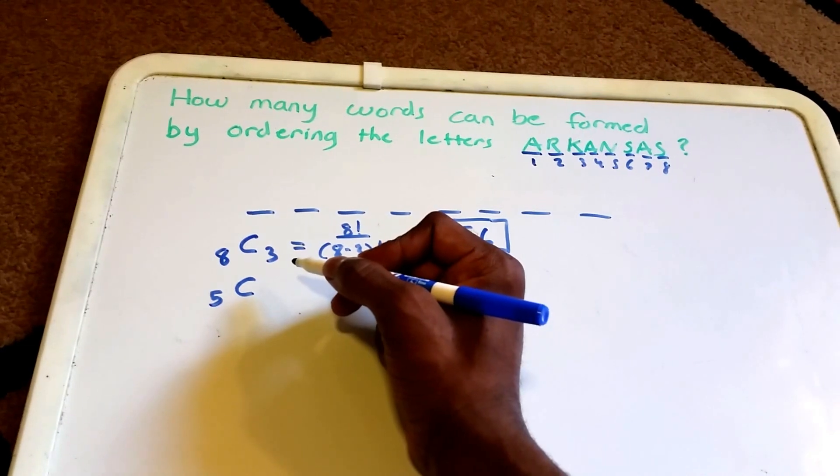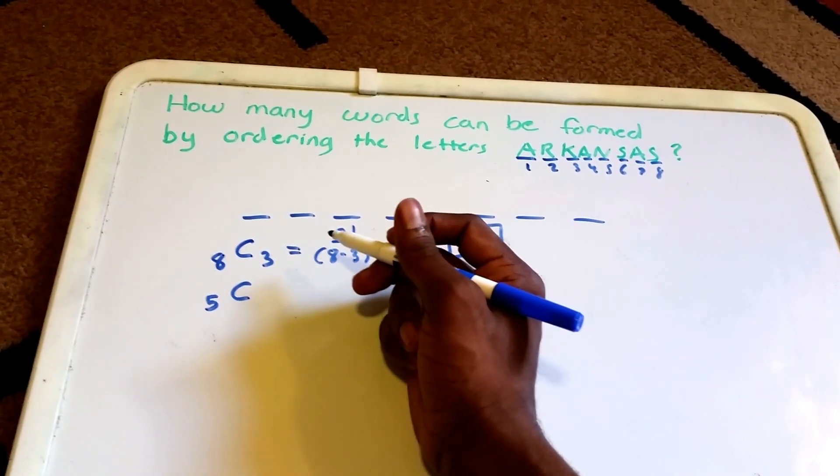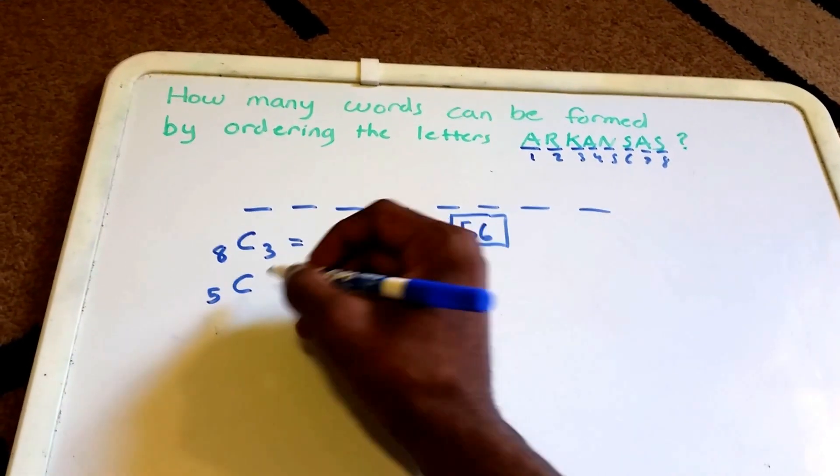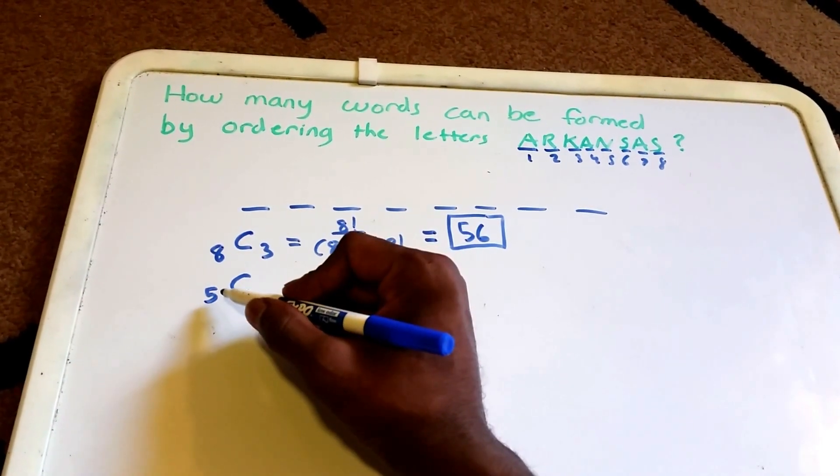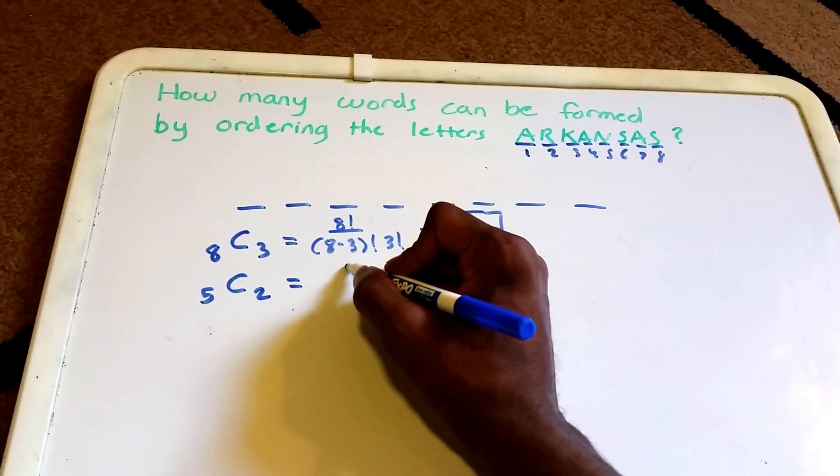We want to see how we can place any two of the S's in any two of the remaining positions, or place the two S's in any two of the remaining five positions. So that is a 5 and we're choosing 2.